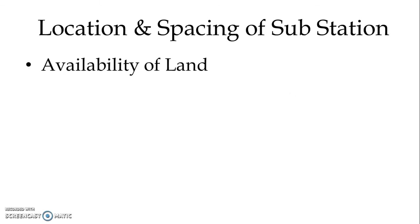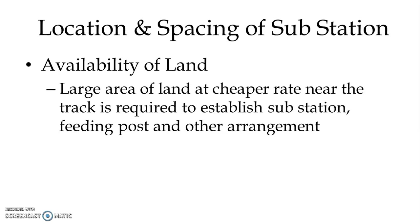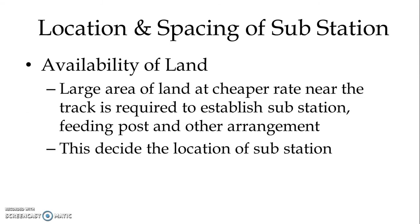Availability of land: a large area of land at a cheaper rate near the track is always required to establish a substation, so this decides the location of the substation. The factor of availability at a cheaper rate is a very important factor to decide the location along the track for the substation.